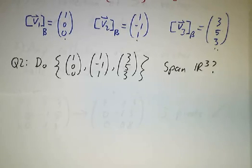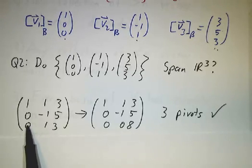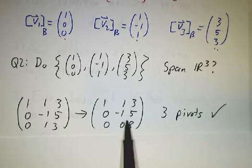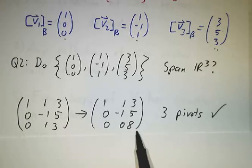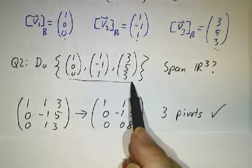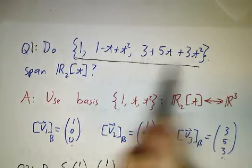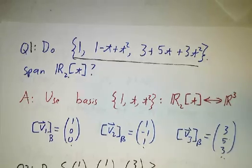Using these coordinates converts this question into the question of do these three vectors span R^3. How do we check that? We package them into a 3 by 3 matrix and we row reduce. We've gotten it into row echelon form. There are three pivots, there's a pivot in each row, so they span. These three vectors span R^3, so these three vectors span the space of quadratic polynomials.